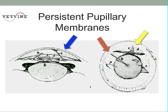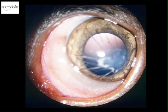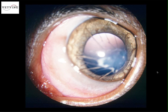In some instances, this can be very extensive, as we see in this particular photograph of a German short-haired pointer dog that has quite a few of these pupillary membranes, again arising from the area of the collarette, but inserting on the corneal endothelium, leading to a white plaque or a leucoma in the cornea.